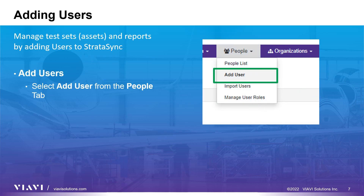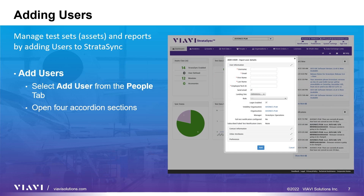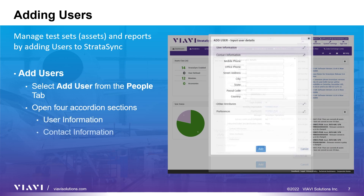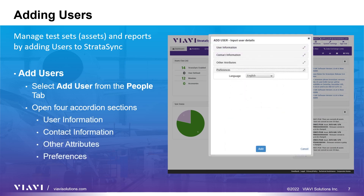More users and test sets can be added to your account so that all test results and updates can be managed. To add a new user to your account, click on the People link in the navigation toolbar and select Add User from the drop-down. To prevent scrolling a long page, the setup window has four segments that can be opened to enter the various user information items. Click the gray color headers for the user information, contact information, other attributes, and preferences. Complete the necessary information for each user and click the Add button to create a user.